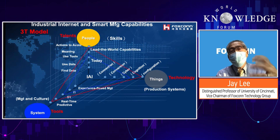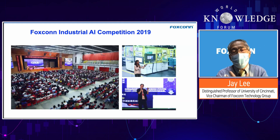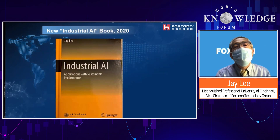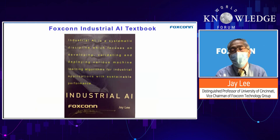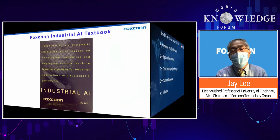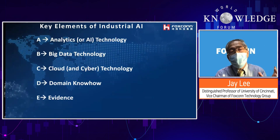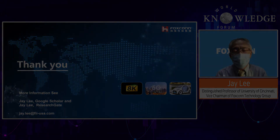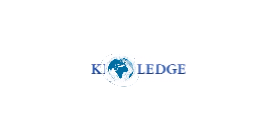We need to train people to have world-leading capability in industrial AI. We've trained thousands of people in our factories, and train engineers to use the system. We have an internal textbook — industrial AI is part of our internal training curriculum. In summary: ABC — AI, Big Data, Cloud — are the basic tools; Domain knowledge and Evidence are our purpose. We drive ABC as a tool, with DE as our purpose — you need evidence of improvement. Thank you very much.